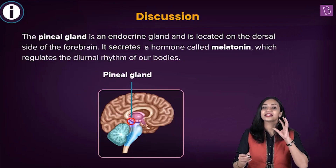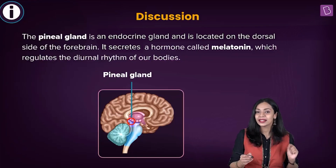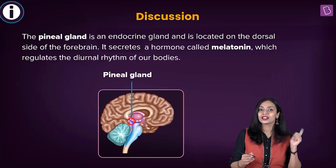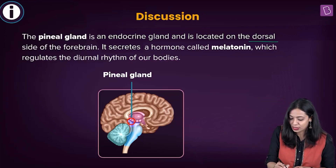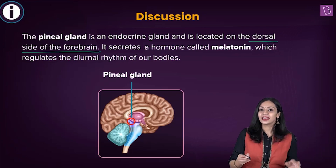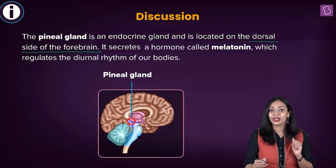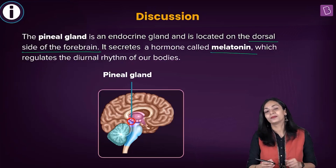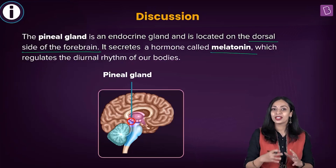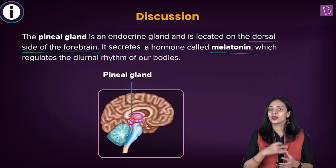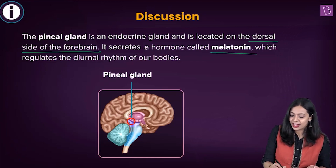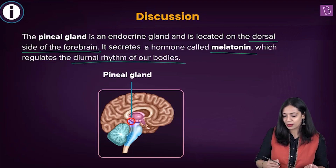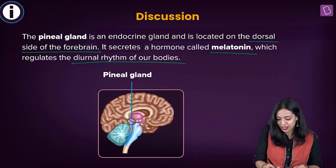The pineal gland is an endocrine gland located in the dorsal region of our forebrain. It secretes one hormone, known as melatonin. Melatonin is the hormone involved in the regulation of the sleep-wake cycle and it controls the diurnal rhythms of our bodies.